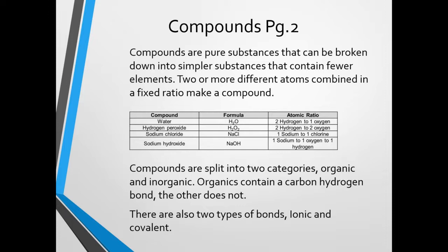Compounds are split into two categories: organic and inorganic. This section deals with the inorganic. We'll have another two ILMs that discuss organic chemistry later. The major difference is that organics contain carbon-hydrogen bonds, whereas the inorganic compounds we're talking about today contain basically everything else that does not have these carbon-hydrogen bonds. There are also two types of bonds: ionic and covalent.